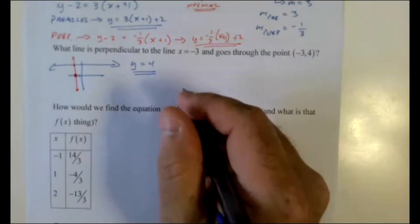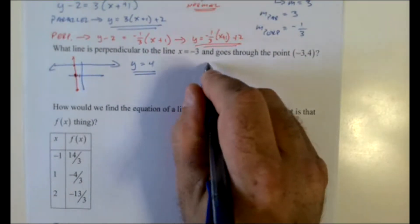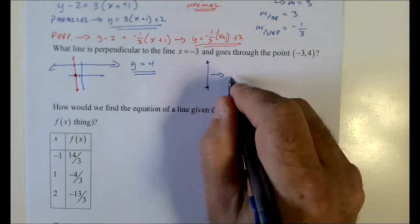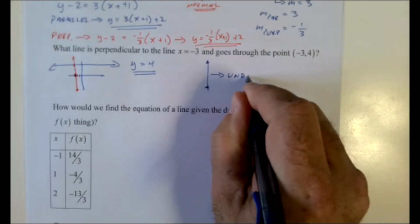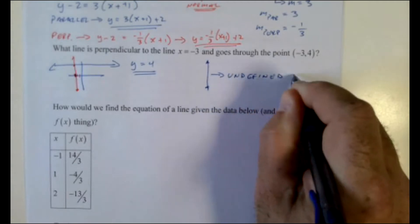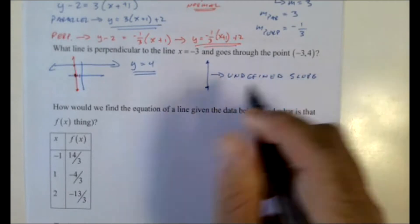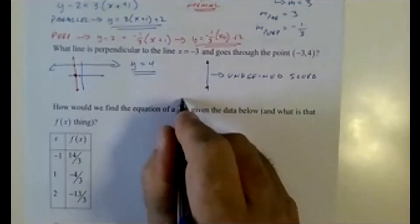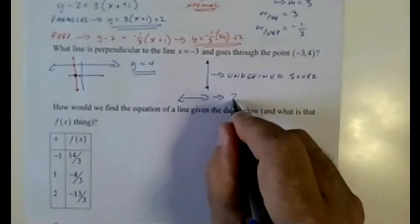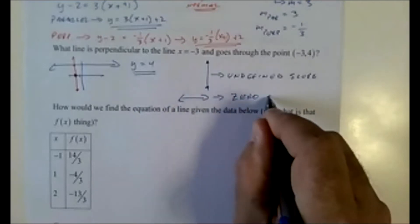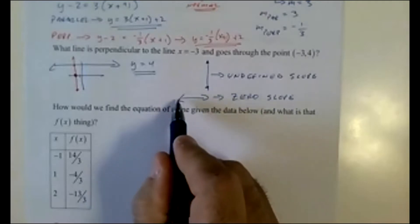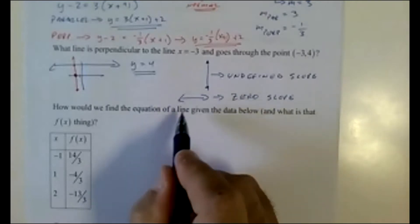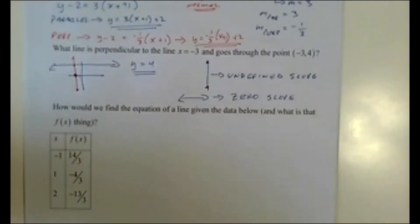Tricks of the trade: a vertical line has undefined slope — think of drawing a U, the first stroke is vertical. A horizontal line has zero slope — think of drawing a zero, the first stroke is horizontal. A student taught me that and I thought it was a pretty cool idea.